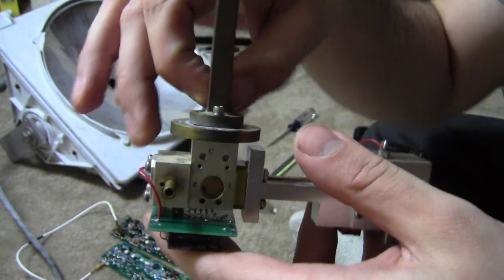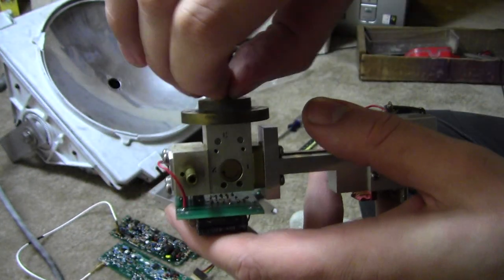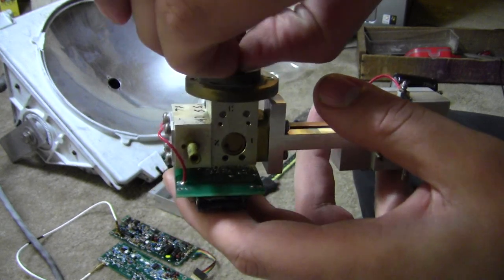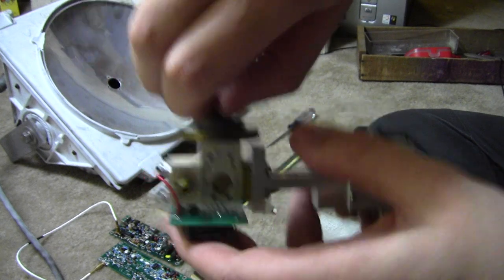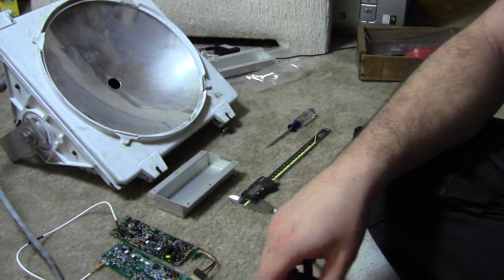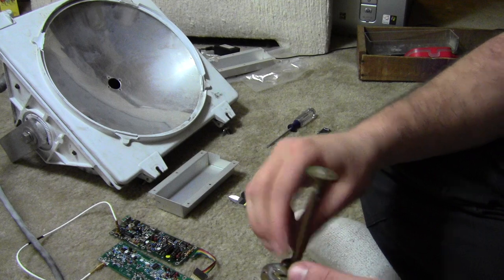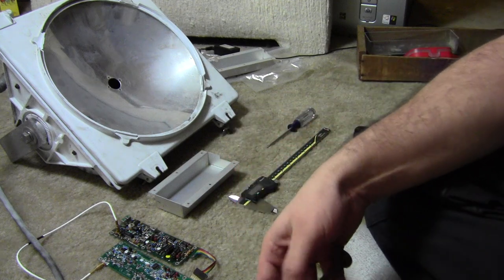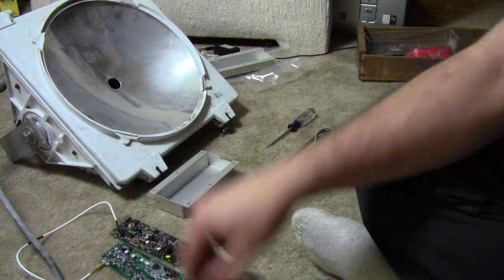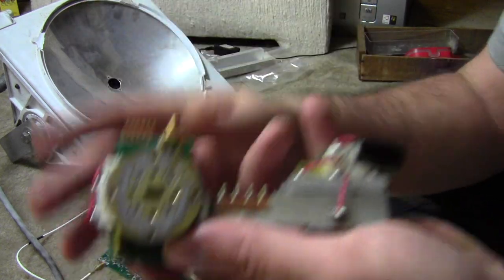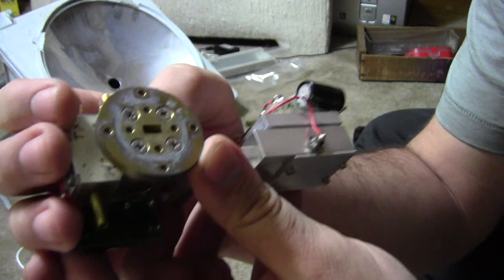If we take the waveguide off here, just to kind of show you what we're talking about. One screw off. There we go. So here's the waveguide, and here we're looking into the circulator.